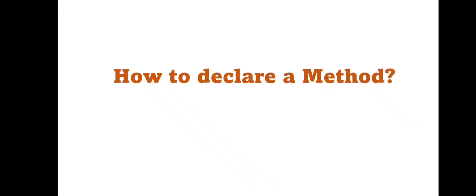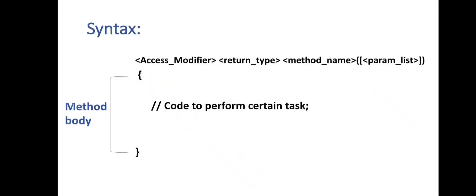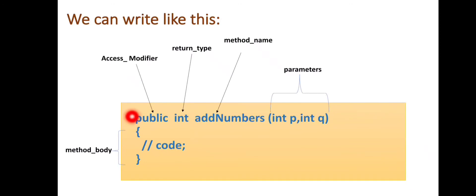To declare a method we need to follow the syntax, and syntax is nothing but a set of rules that we have to follow to write the code of a program. We can use the following syntax: first we have to write the access modifier, next to that there will be a return type, followed by the method name. The method can accept parameters if needed, and then there is the method body, which is enclosed by curly braces. Inside the method body we write the code to perform a certain task. For example: public is the access modifier, int is the return type, addNumbers is the method name, and int p and int q are the parameters.